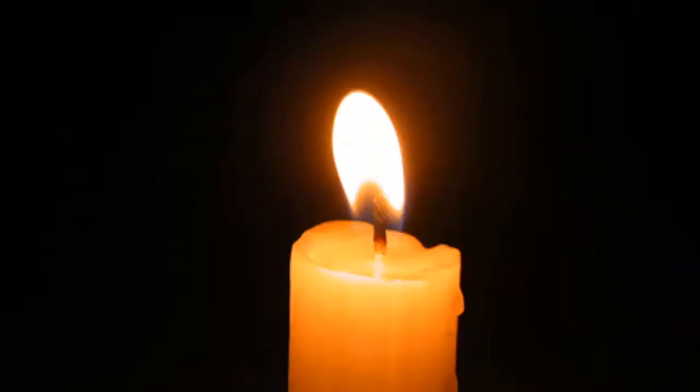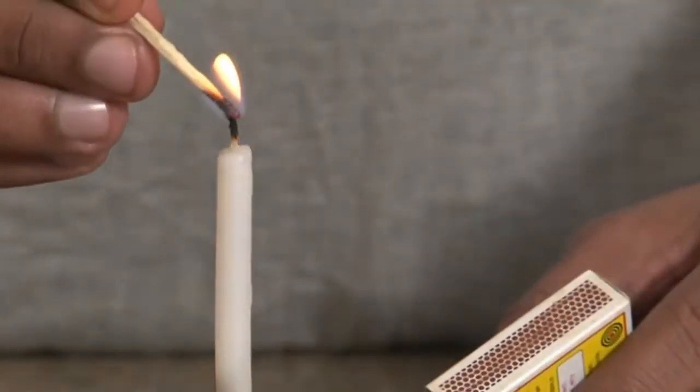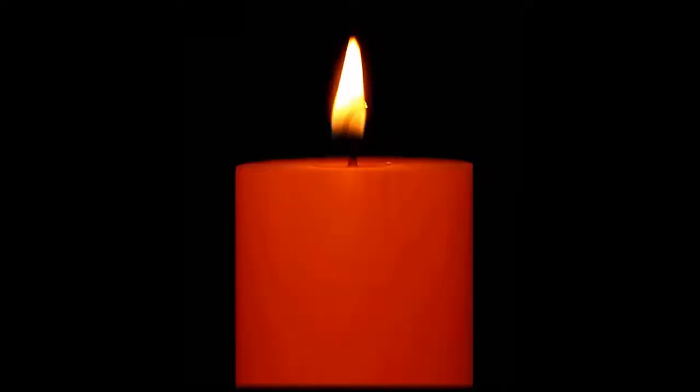Now let us learn how a candle burns. When you light a candle, wax gets melted in and near the wick. The wick absorbs the liquid wax and pulls it upward because of capillary action.